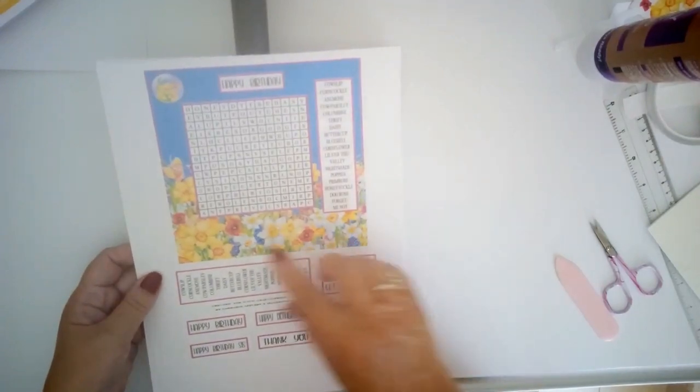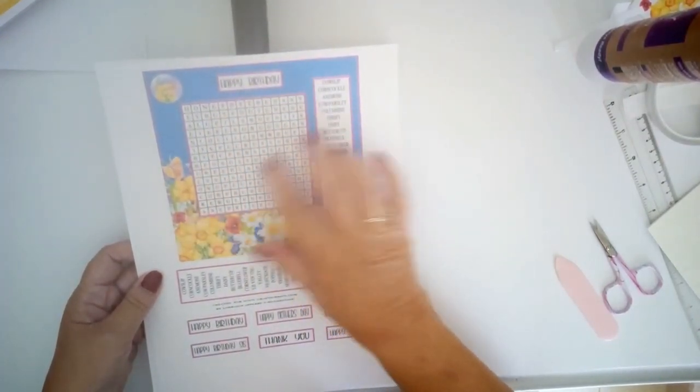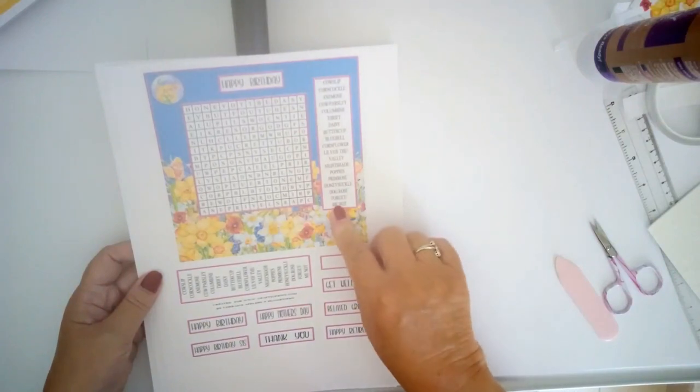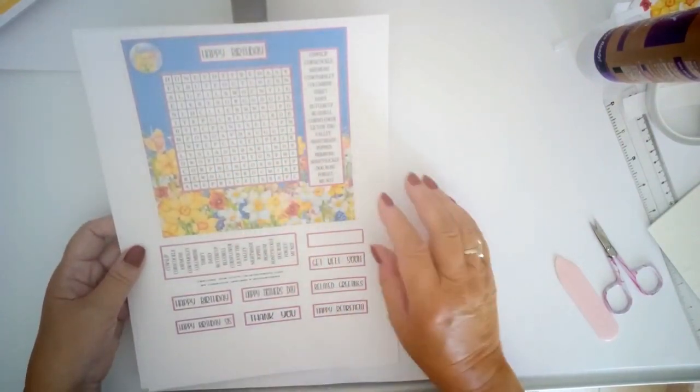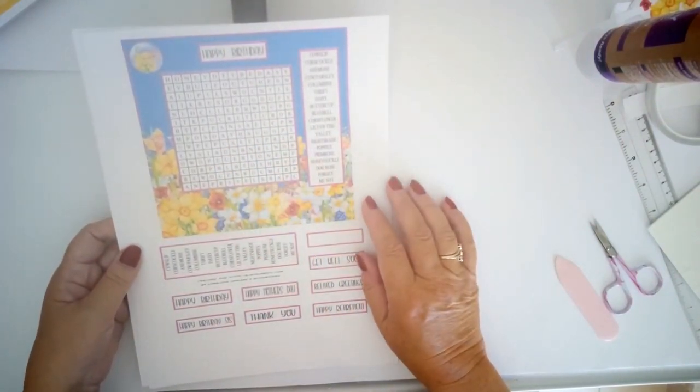The first sheet has the front of the card on it here with the word search printed on and the list of words down the right hand side. All that's going to go on the front of a card blank.